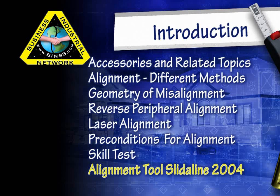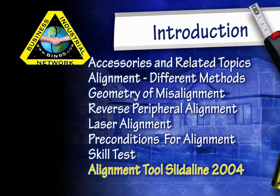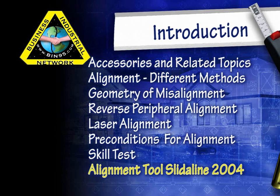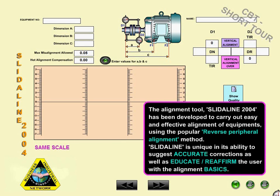The exclusive tool, SlideAlign 2004, is provided with help content to guide the user in understanding and using the tool. SlideAlign 2004 has been developed to carry out easy and effective alignment of equipment using the popular Reverse Peripheral Alignment Method. SlideAlign 2004 is unique in its ability to suggest accurate corrections, as well as educate the user with the alignment basics.